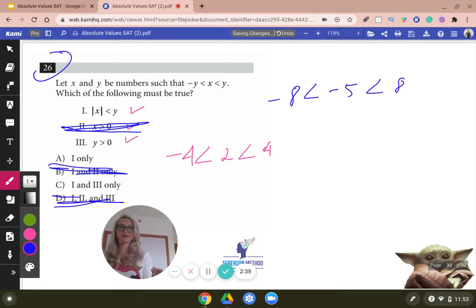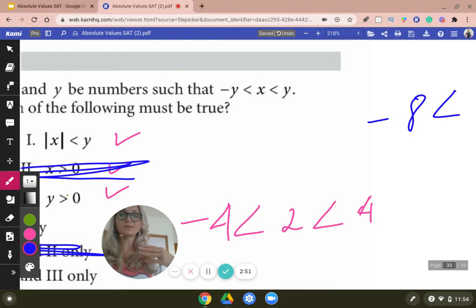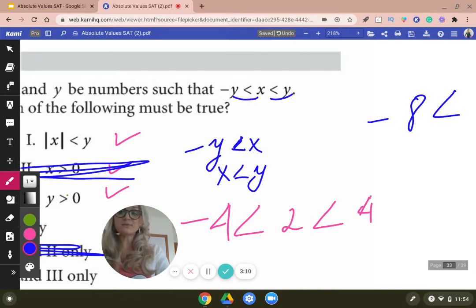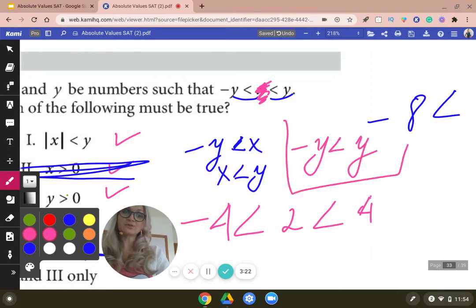Now we have to check if three has to be correct and that will make us decide between A and C. Now, how do we do that? Did you guys know that this little inequality actually yields, creates, produces three inequalities. It creates negative Y is less than X. It also gives you that X is less than Y. But did you also know that you can pretend that the middle thing doesn't exist and that you can derive that negative Y is less than Y. Make sure you know how to do that.